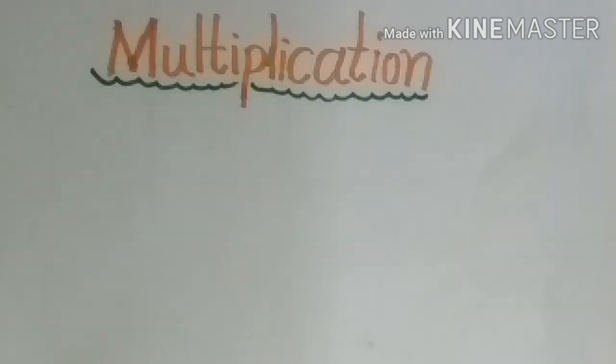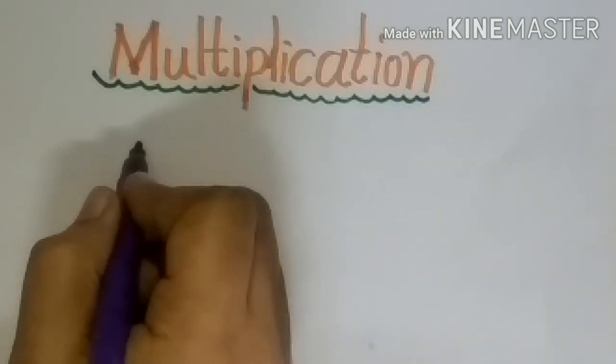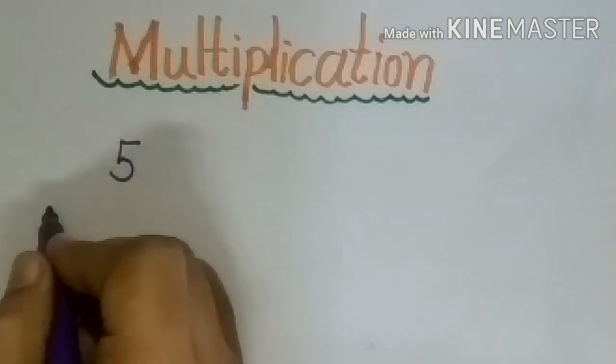Multiplication. If we want to do multiplication, at first we have to learn all tables because tables are very important in multiplication. At first we will start from multiplying one digit number to one digit number, for example 5 multiply by 3.